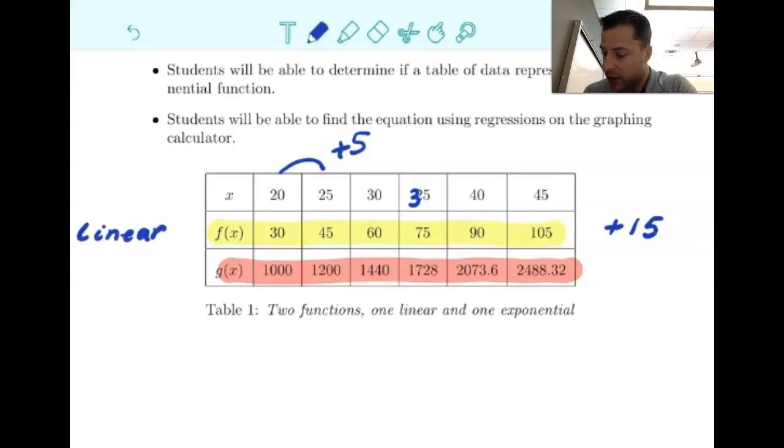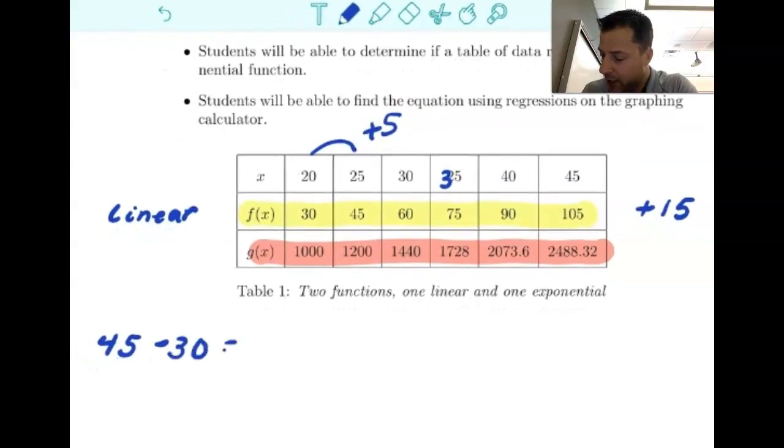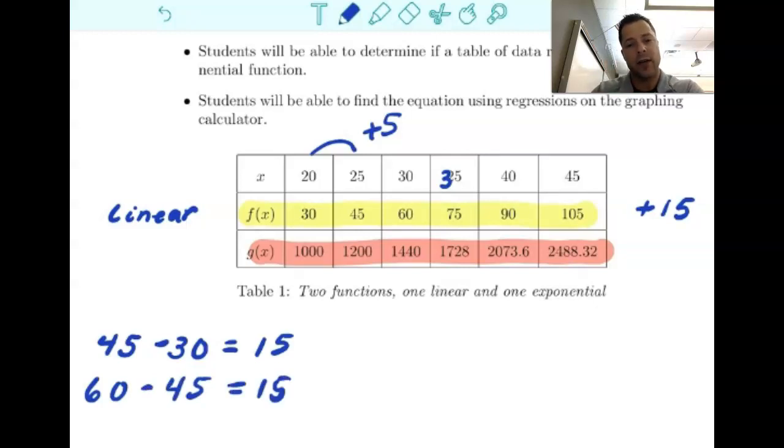Remember, if we take those differences, for example, so if we take 45 minus 30, we get 15. If we take 60 minus 45, we get 15. And so what we're doing is we're taking the next f of x value and subtracting the previous one, right? So 75 minus 60. And you can see that when we take these first differences, right after the first difference, we have something that's constant. So that means it's a linear equation.